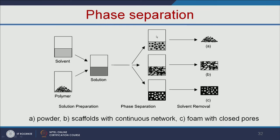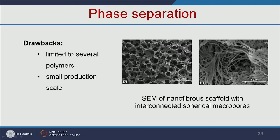In phase separation, solvent and polymer are mixed to form a solution, and with respect to temperature, the phase is separated to yield different porous and fibrous scaffolds. The drawbacks are that it is limited to only several polymers and only small production scale is possible.